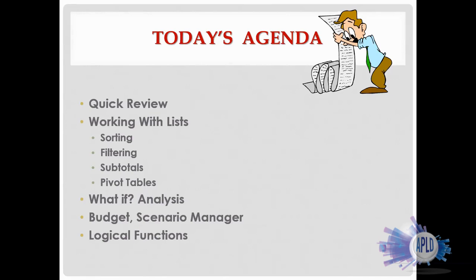We're going to do some work with lists and I'll show you how to sort them, filter them, take subtotals, and turn them into pivot tables. Then we'll do some what-if analysis, which is a great tool if you're trying to change information without permanently changing it. I'll also show you a sample budget and some logical functions. Excel has over 300 functions, and most people don't know all of them.